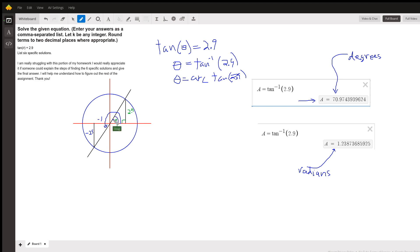But there's another angle down here in the third quadrant that has the same ratio, negative 2.9 over negative 1. And that angle is 180 degrees more than this theta.